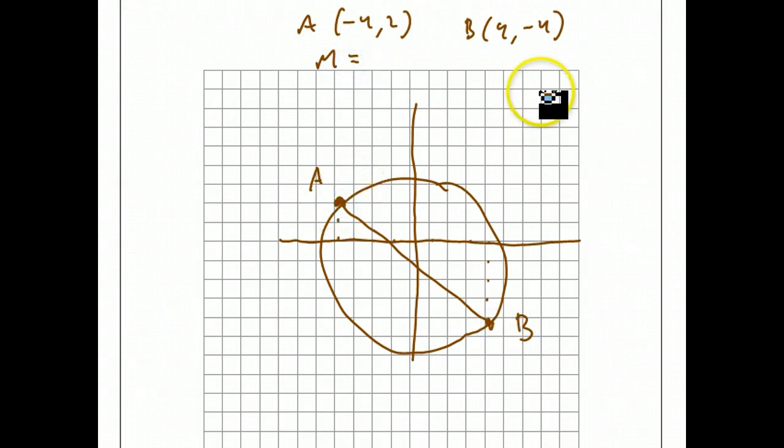To get the midpoint, we find the average of the two x-coordinates. So minus 4 plus 4 over 2 is 0 over 2 equals 0. That's the x-coordinate of the midpoint. And the y-coordinate of the midpoint is the average of the y-values, so 2 plus negative 4 over 2, which equals negative 1. So the midpoint is 0, negative 1.